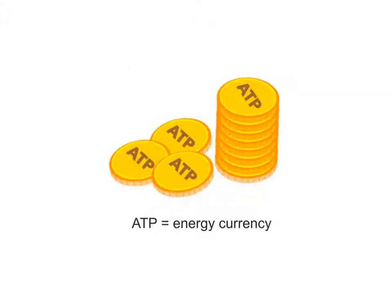One way to understand the function of ATP inside a cell is to think of it as a type of energy currency or money. When a cell needs work to be completed, it must spend ATP, just like we need to pay others, like plumbers or electricians, with money for services they perform.